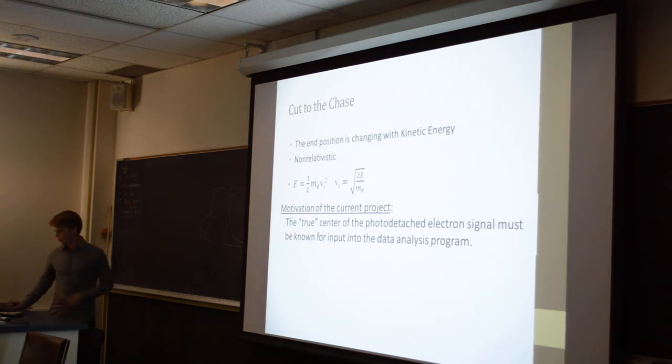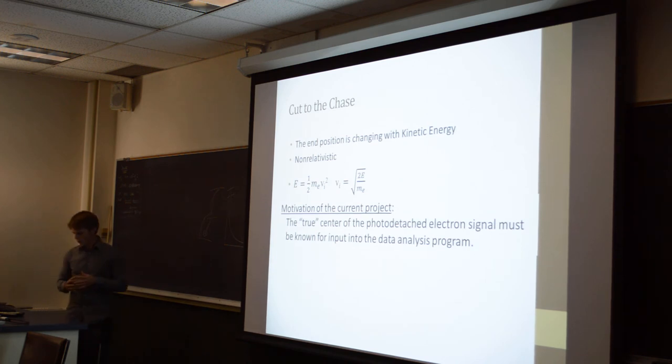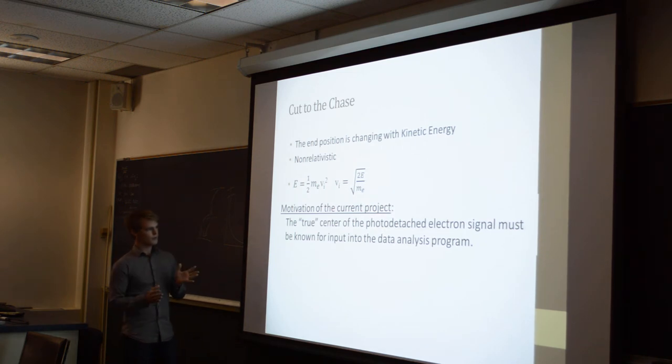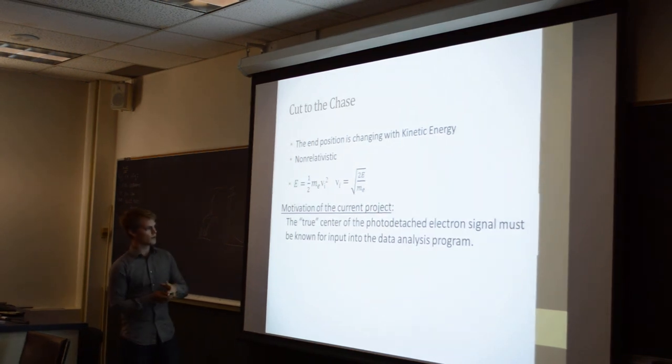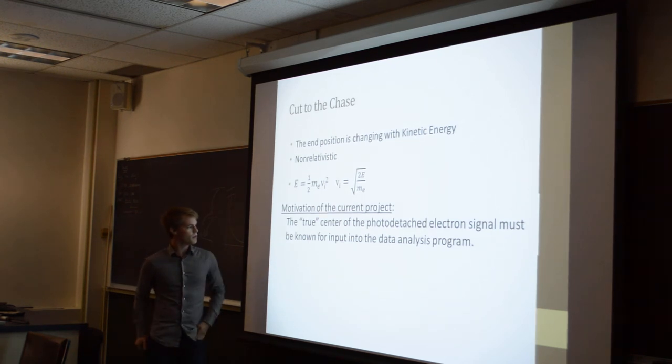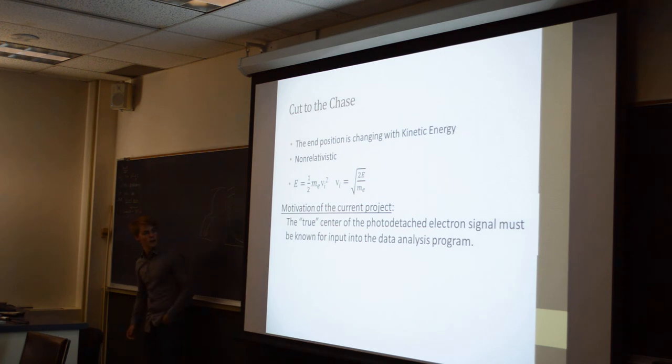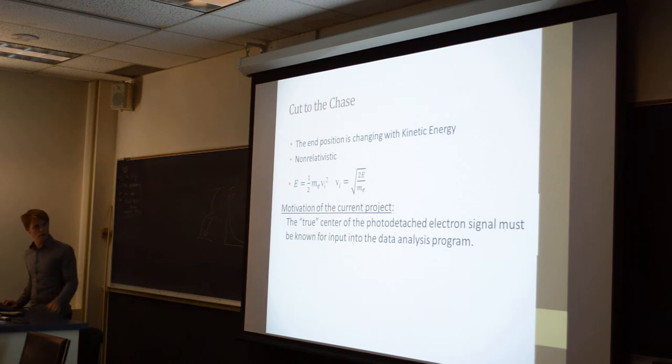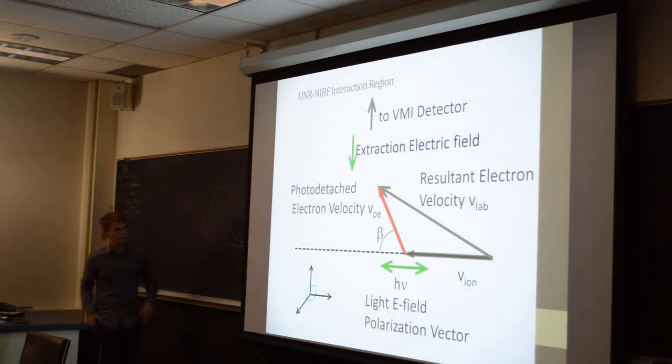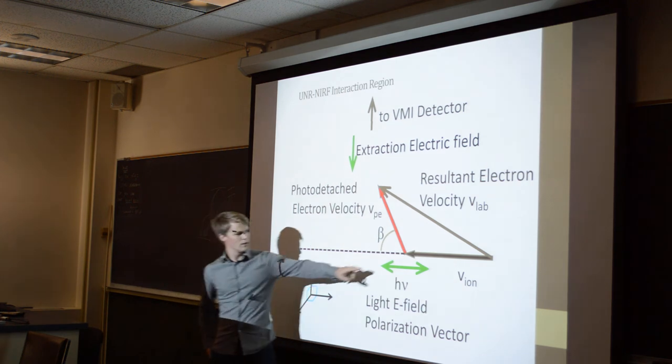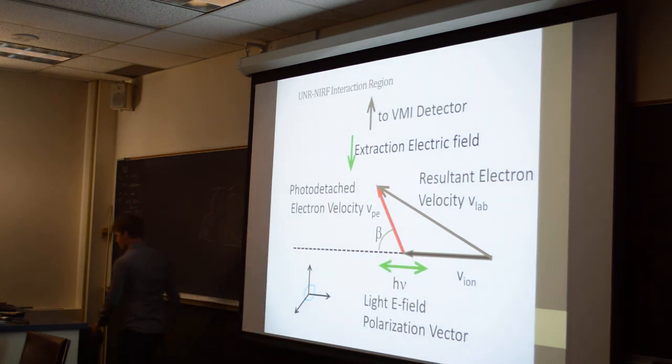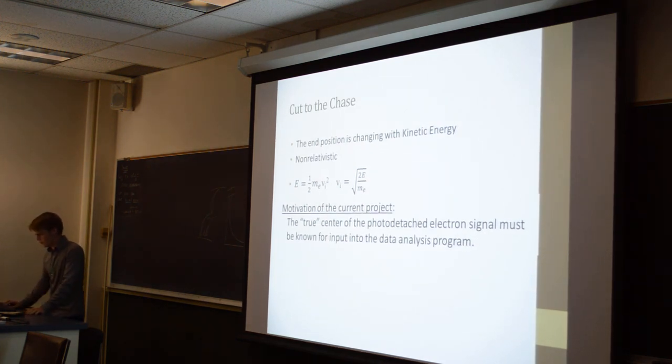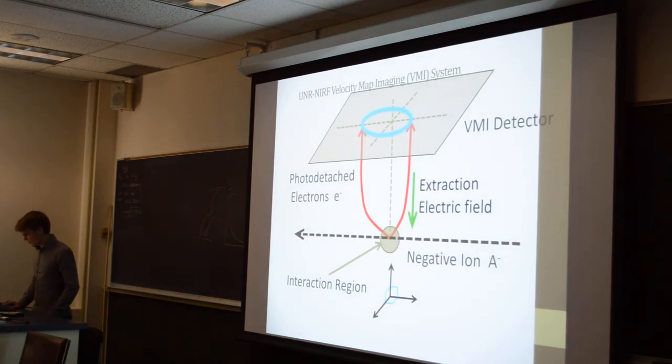So then our project was to find the center of the distribution of the photodetached electron. So that way, we can plug it into a computer program to better understand what's happening. And it should follow a kinetic energy relation so that the center is purely dependent on the velocity, the velocity of the ion. It's the only thing that the center depends on. And so the center should go as 2eV over m to the one-half power. But it doesn't look like that's happening.